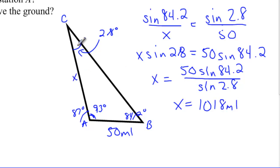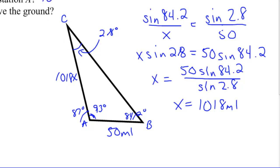So that distance — 1,018 miles — is how far the satellite is from station A.